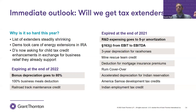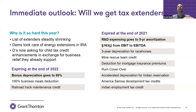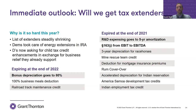Section 163J is also changing, making the amount of interest you're allowed to deduct every year a smaller number. The limitation will be calculated by reference to earnings before interest and taxes, as opposed to earnings before interest, taxes, depreciation, and amortization. So that number becomes smaller by the depreciation and amortization margin — further pinching US companies on their ability to deduct interest in the worst possible environment with rising interest rates. Both of these provisions were embedded in the 2017 Tax Cuts and Jobs Act under President Trump's administration. Because it was a reconciliation bill, it had to raise revenue — so these revenue raisers were put in. I kind of refer to them as ticking time bombs sitting inside this legislation.